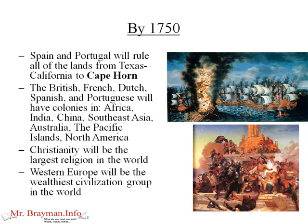Let's fast forward. We've taken this tour of 1450 — now let's jump ahead to 1750 to give you a sense of the change. By 1750, Spain and Portugal will rule all the lands from roughly the Texas-California line all the way down to Cape Horn, the southern tip of South America. And the British, French, Dutch, Spanish, and Portuguese will have colonies in Africa, India, China, Southeast Asia, Australia, the Pacific Islands, and North America. Really, there's no continent and no population center that isn't in contact with — and in many cases dominated by — the Europeans, just 300 years later.